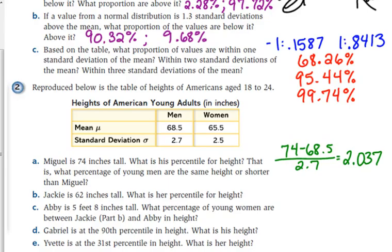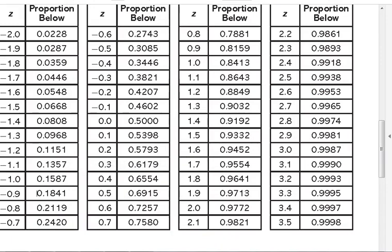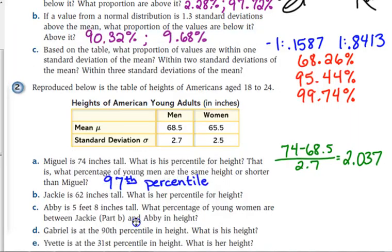And it asks for the percentile. Percentile, remember I mentioned yesterday, you just drop the decimal. You do not round up. Do not round up on percentiles. So we would just use the 97 here. It's at the 97th percentile. 97% of men are the same height or shorter than Miguel. And 74 would be about 6'2".